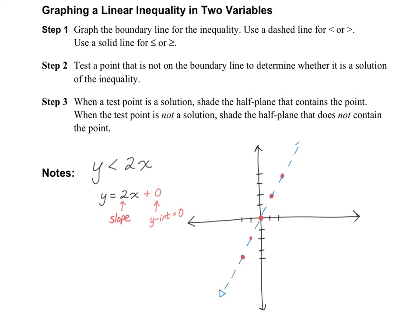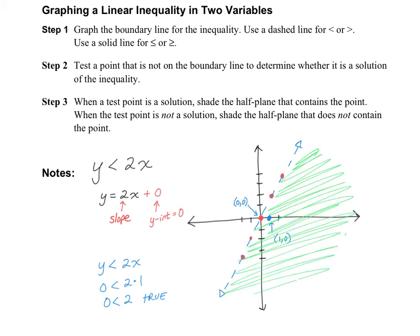Now we need to decide which direction we want to shade. Pick a point not on the line. I like to use (0, 0), but since (0, 0) is on the line, I'm going to choose (1, 0). Let's plug (1, 0) into the original inequality y is less than 2x. My y value is 0 and my x value is 1. So 0 is less than 2 — that is true. That means we're going to shade towards this point, shading everything on this side of the graph.